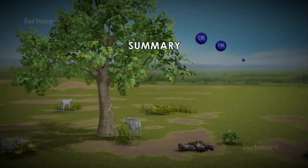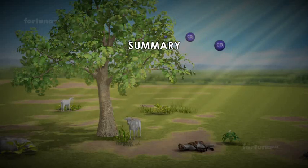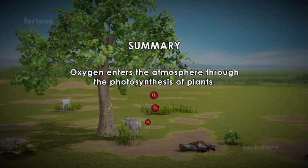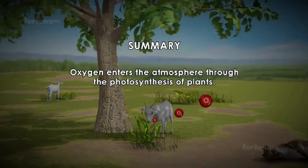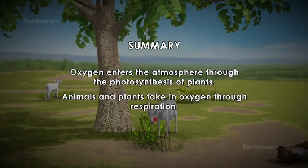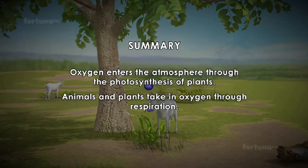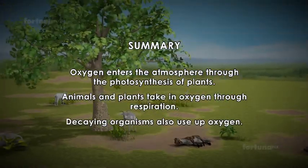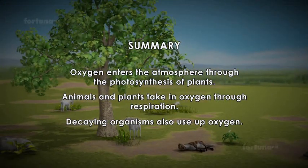Oxygen summary: Oxygen enters the atmosphere through the photosynthesis of plants. Animals and plants take in oxygen through respiration. Decaying organisms also use up oxygen.